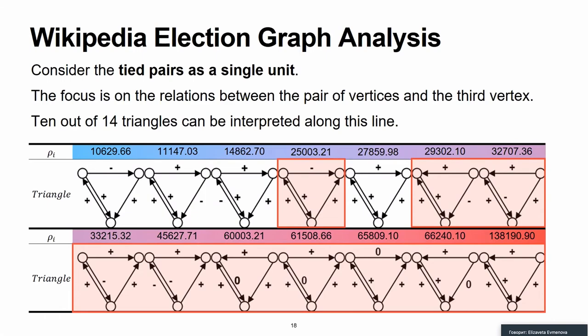The interaction structure within a tied pair is formed according to different rules that cannot be adequately described by either the structural balance or status theory. This result stresses the need to distinguish between single edges and pairs of reciprocal edges.